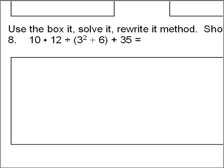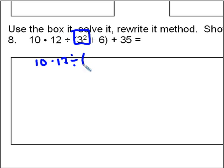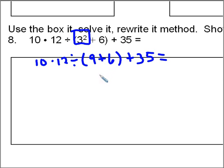The last problem I'm going to work out is problem number 8, the order of operations problem. To do this problem, we're going to use the box it, solve it, rewrite it method. So we're going to go inside the parentheses and do the exponent here first. I'm going to box that in — 3 to the second power is 9. So I'm going to rewrite it as 10 times 12, divided by parentheses 9 plus 6, close parentheses, plus 35. I'm still inside my parentheses doing 9 plus 6, so that's going to be 15.